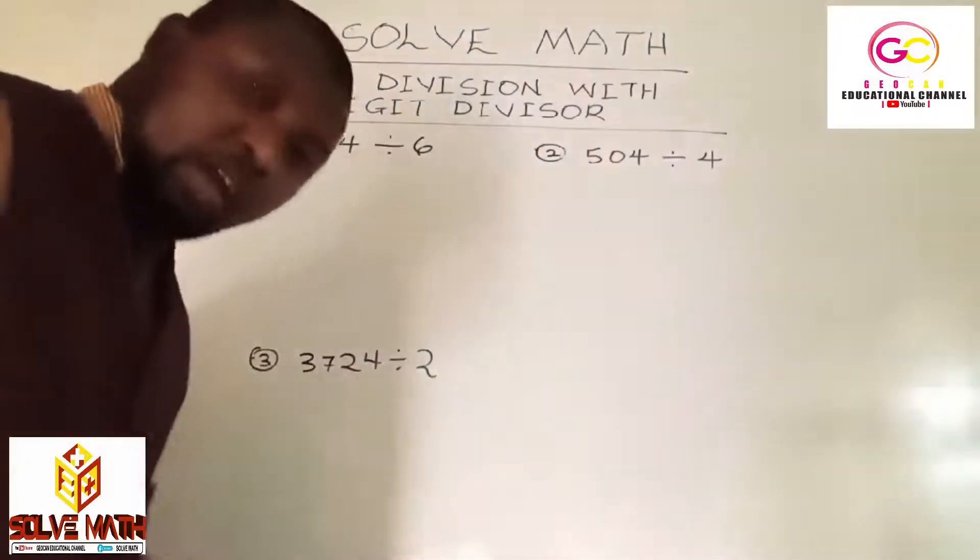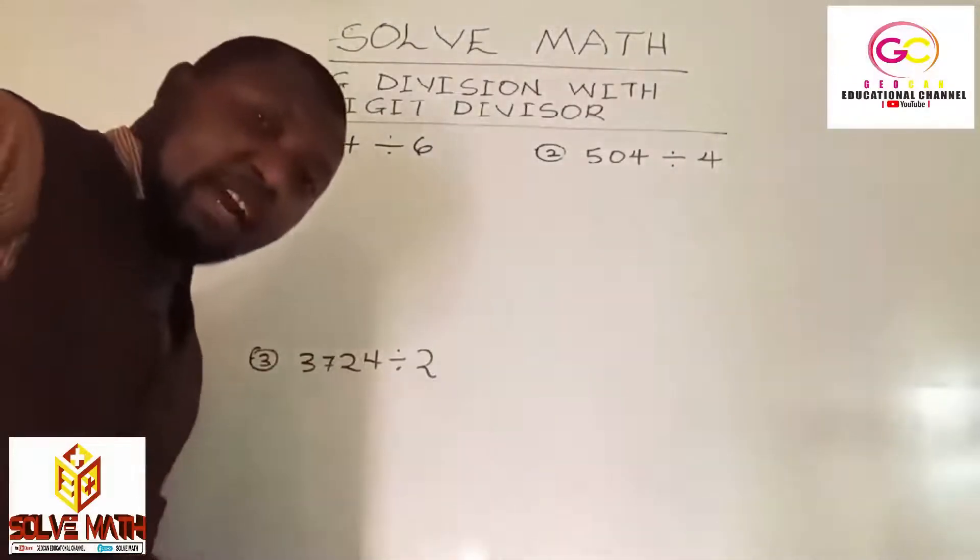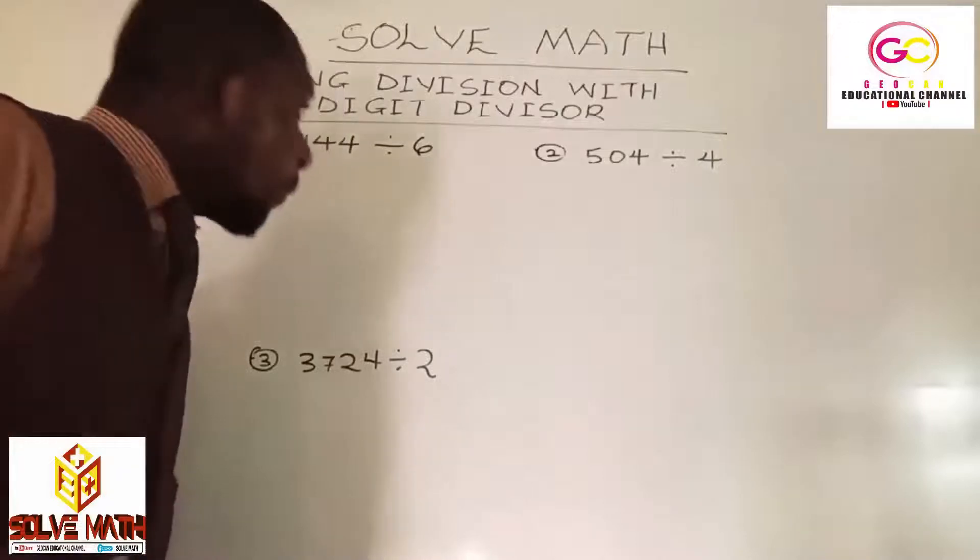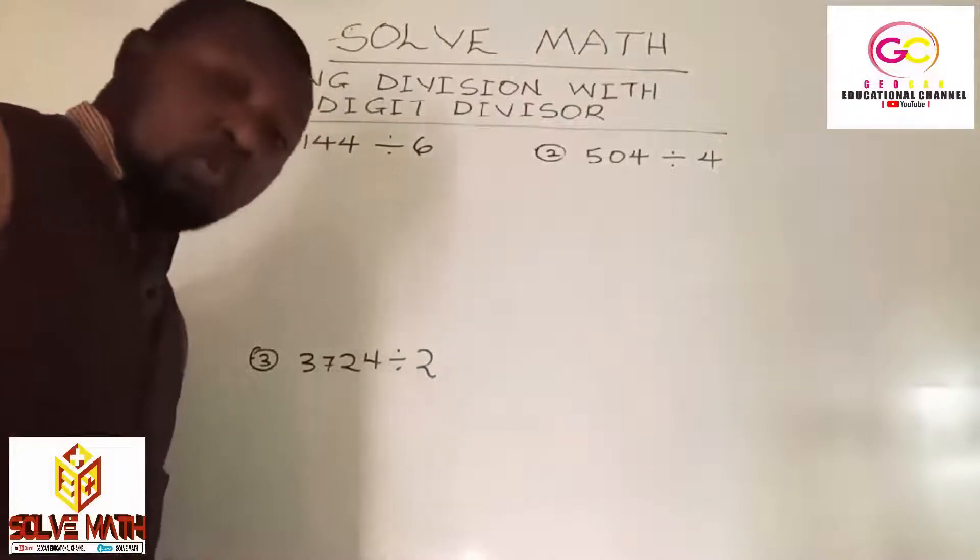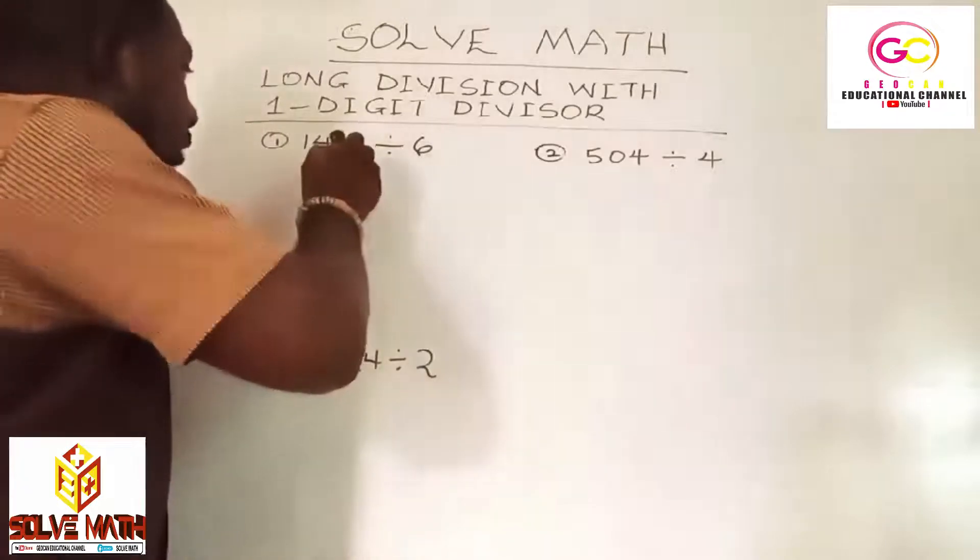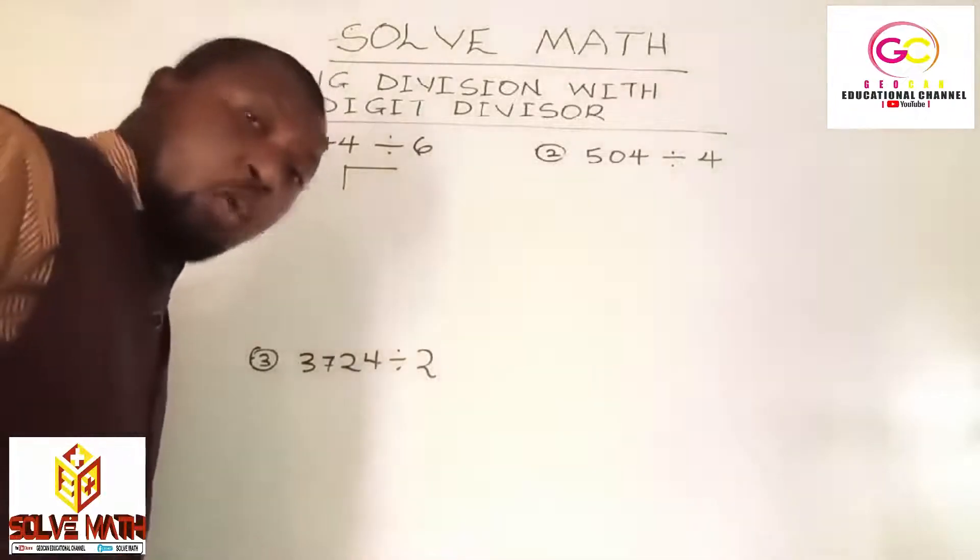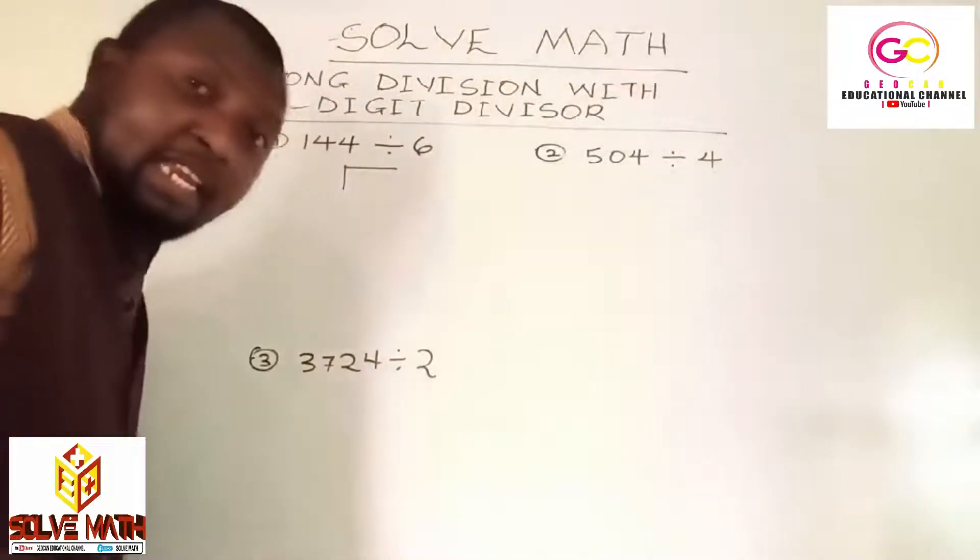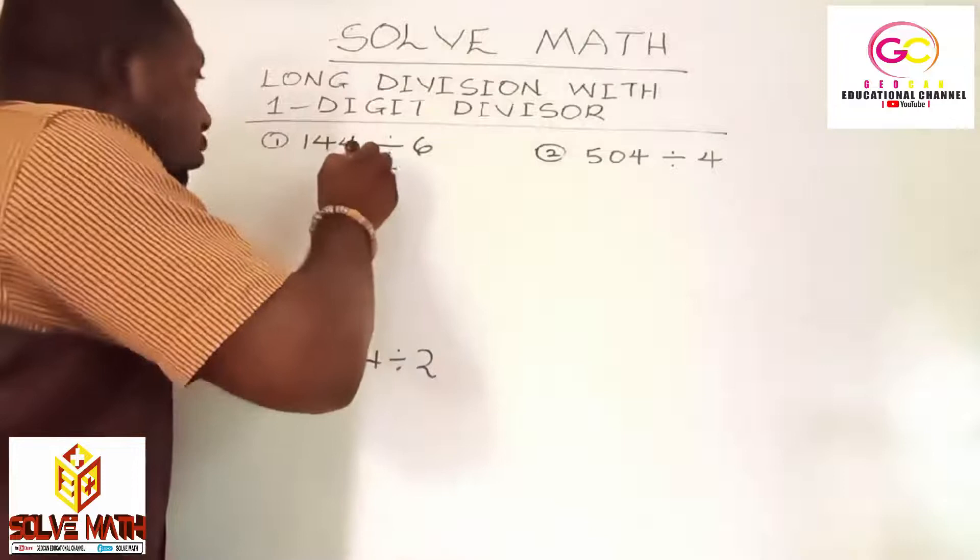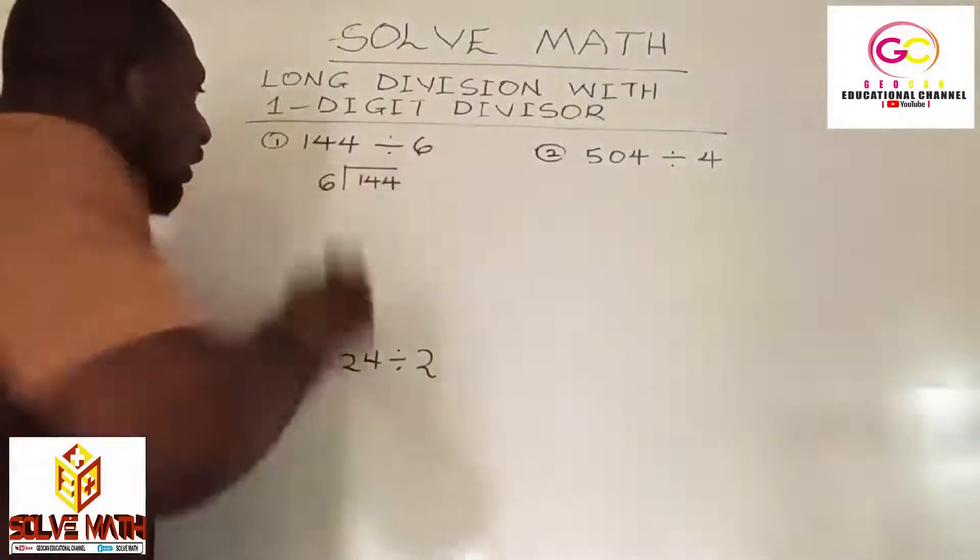This is what you have: 144 divided by 6. You are told to use long division in solving this. You have your symbol over there. This is the dividend and this is the divisor. The dividend goes in and the divisor comes out. So you have 144 in and your 6 out.